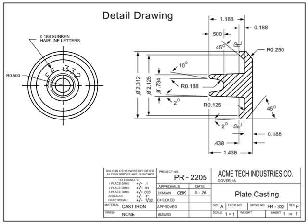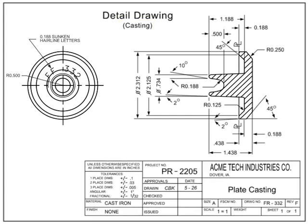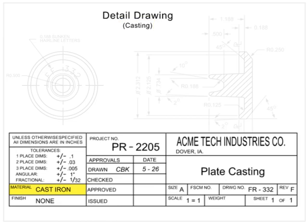As such, there are also a variety of detail drawings depending on the way in which a part is generated. A casting drawing is a type of detail drawing for parts made by casting or molding. The material for the part is typically called out in the material block, although it can sometimes be found in the notes section.